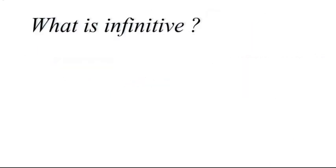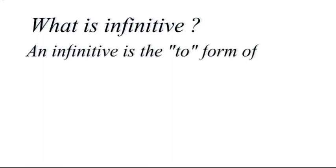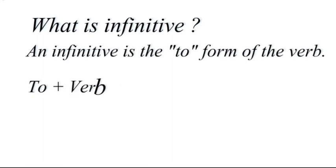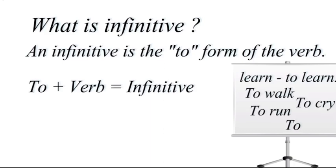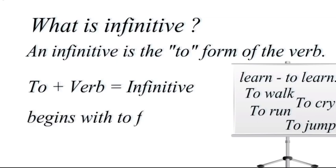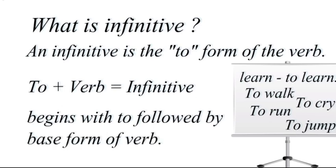An infinitive is the 'to' form of the verb — it is made by using 'to' before the verb. The infinitive form of 'learn' is 'to learn.' Similarly: to walk, to run, to try, to jump — all of these are infinitives. An infinitive will almost always begin with 'to.'